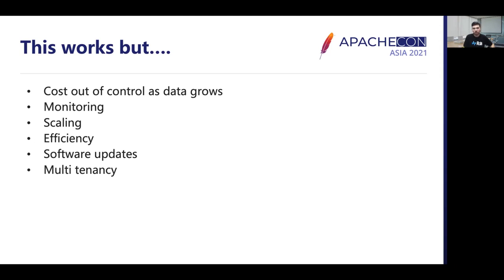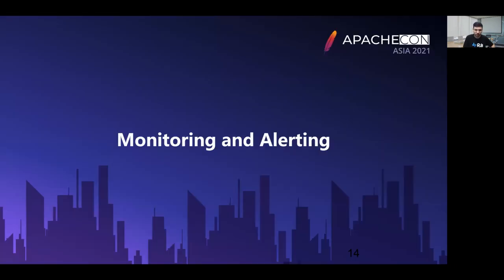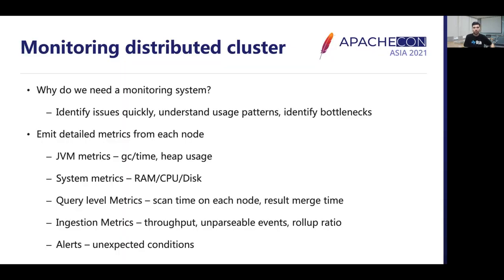Let's talk about the strategies implemented over time to handle those issues. Before we did any performance improvements, we knew we needed a reliable system to measure the impact of changes. So we focused on building a monitoring and alerting service. The monitoring service was an essential part of the system as it allowed us to identify issues quickly, understand user behavior and query patterns, and identify bottlenecks in the system.